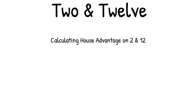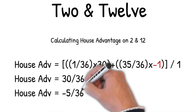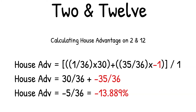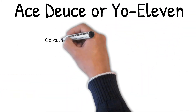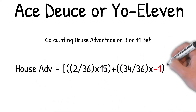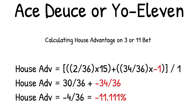Calculating house advantage on the Two and Twelve: house advantage equals one out of 36 chance to win times thirty dollars, plus 35 out of 36 chances to lose times minus one dollar. Add those together, divide by a one dollar bet: 30 out of 36 plus minus 35 out of 36 equals minus 5 out of 36, which equals minus 13.89% house advantage.